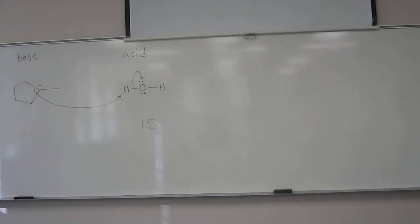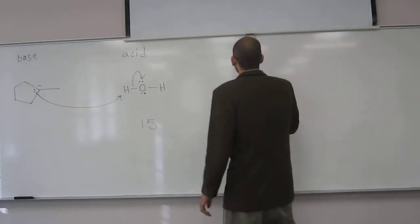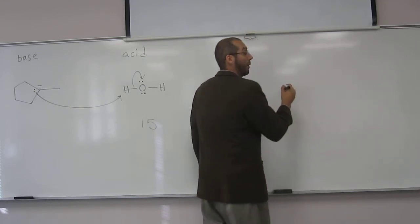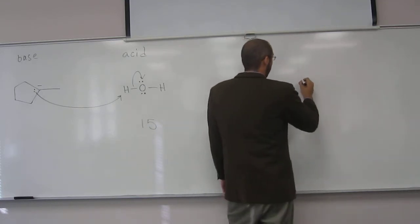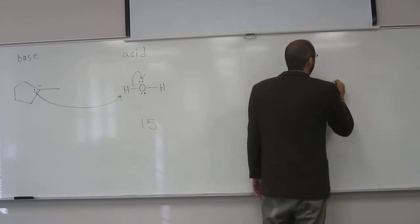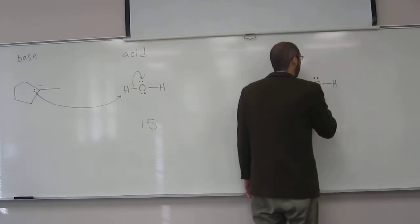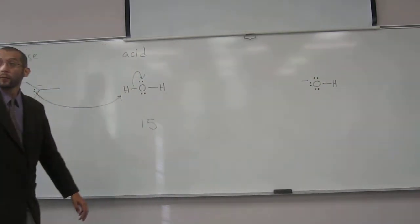So now what are we going to do? Go to the other side and draw products. What's one of the products? Hydroxide. The OH minus, right? How many lone pair electrons do I have around that oxygen? Three. Three lone pairs. Very good. Or six electrons in all.